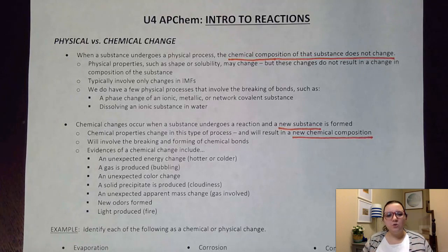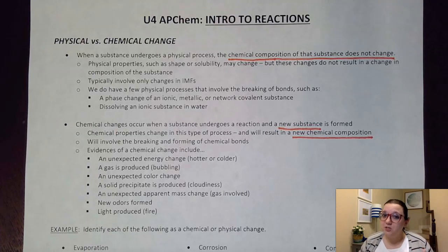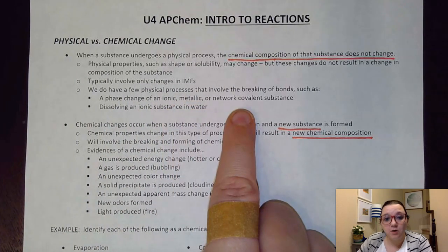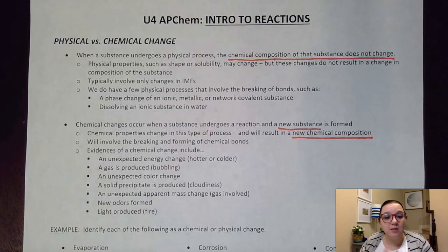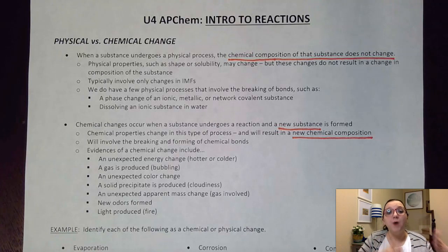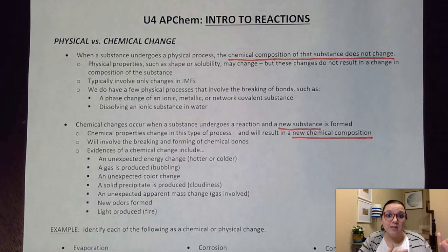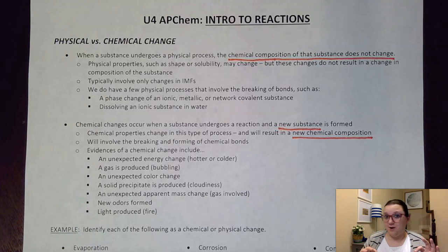However, as we learned last unit, we do have a few phase changes that involve the breaking of bonds, depending on what kind of substance we have. So this may challenge something that you previously remember from middle school. A lot of times they simplify things and say bonds don't break with physical changes. Well, that's true most of the time, but we do have a few instances where bonds can change. For example, if I have a phase change of an ionic, metallic, or network covalent, remember on those they have such high melting and boiling points because what's happening is that I'm actually breaking bonds instead of breaking intermolecular forces. However, we would still consider those a physical process because I'm not changing the formula of that substance. I'm simply breaking the bonds in order to get it to go to a different state. So keep that in mind. It's kind of a little bit of a gray area there for that one.